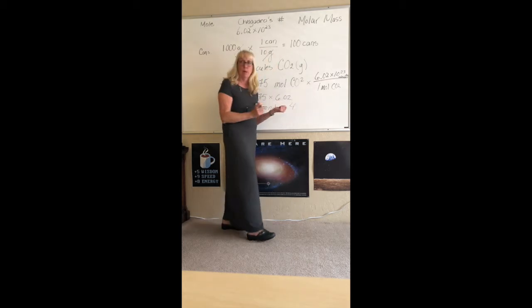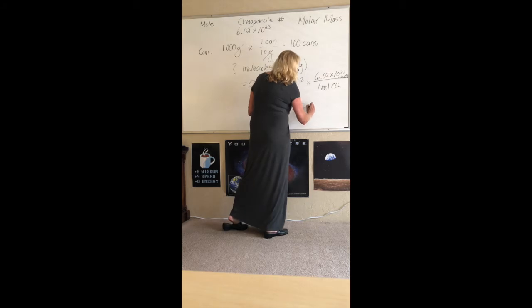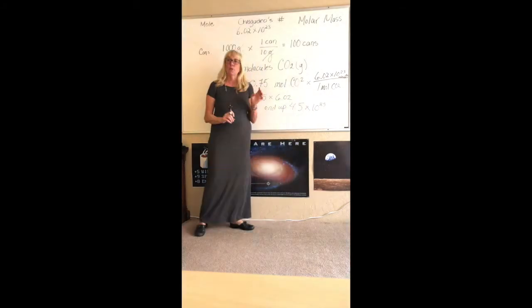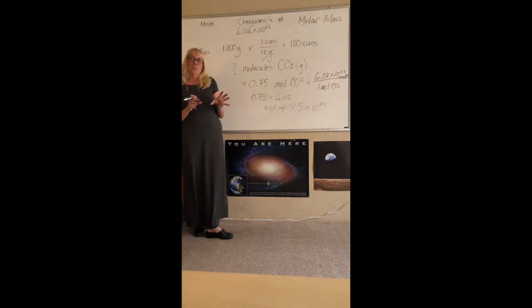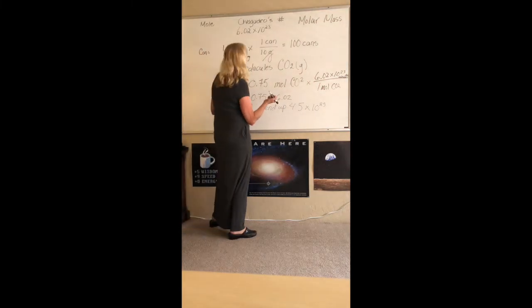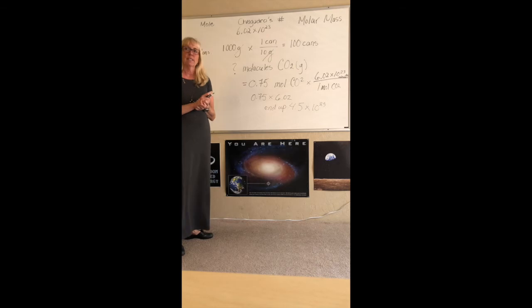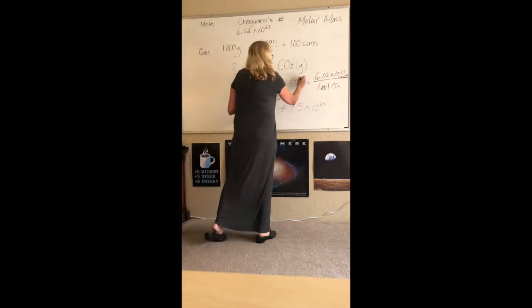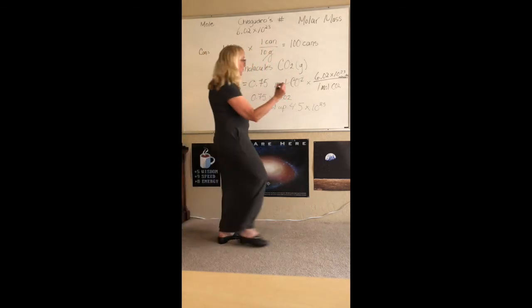We're going to end up with 4.5 times 10 to the 23rd. Keep in mind when we're doing the factoring out we have to make sure we cross cancel out certain things. What am I going to cross cancel out? Mole CO2 and mole CO2.